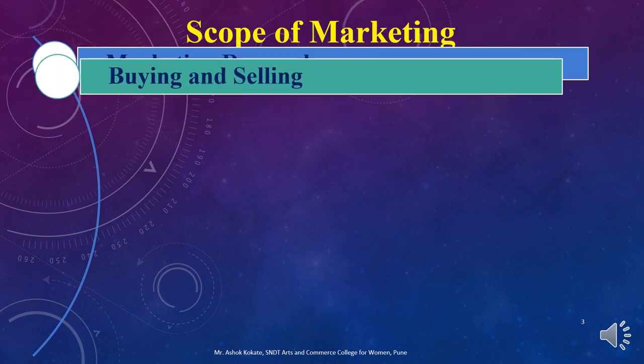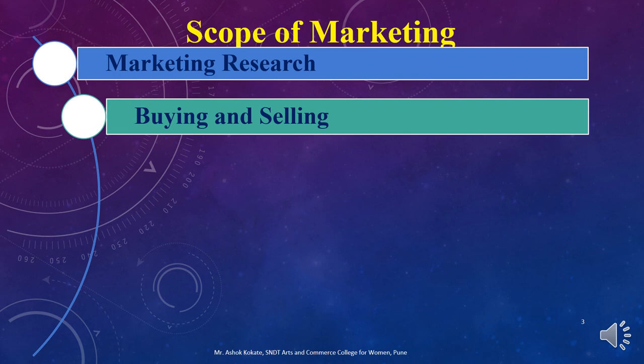The second scope of marketing is buying and selling. Marketing is a very vast concept, and buying and selling are both parts of it. Buying-related activities are part of marketing because for the production of any product we need raw materials, semi-finished goods, or finished goods. The material required for production is largely based on market information provided by the marketing department.